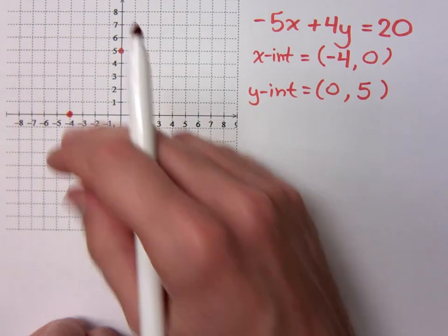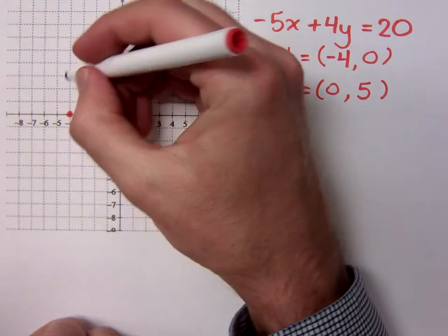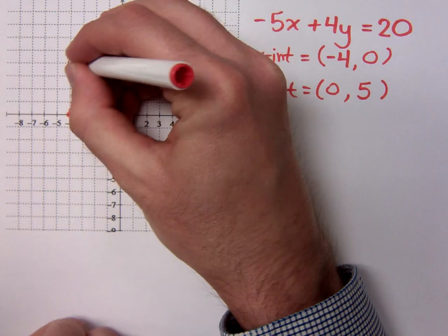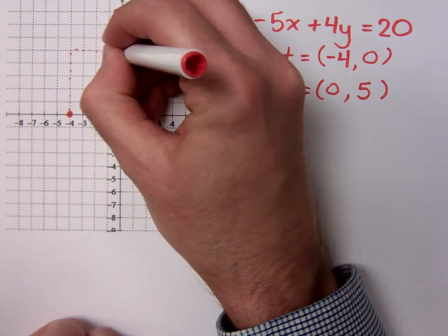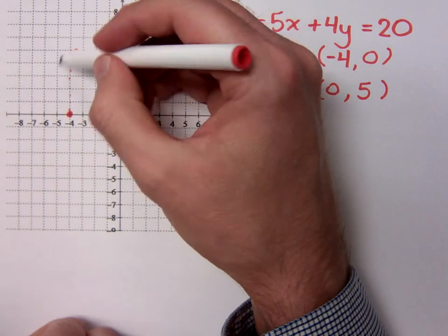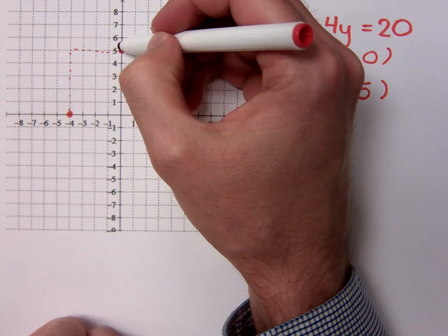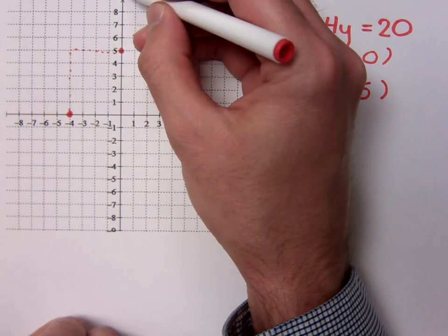Now, if we try to get the slope, we can kind of get that from the graph here. How far are we going up, and how far are we going over? Up 5 over 4. If I try to do that again, up 5, I'm going to be off the graph here.